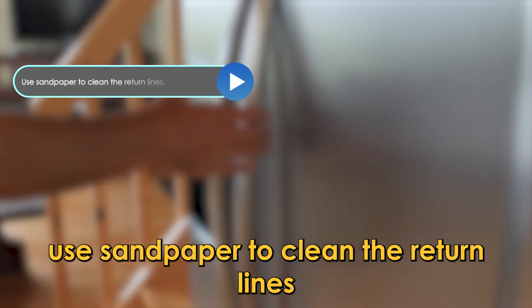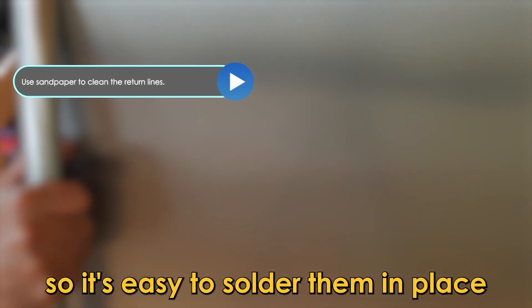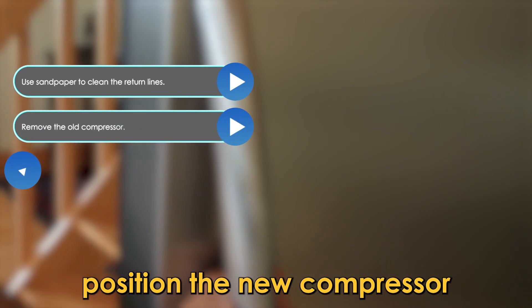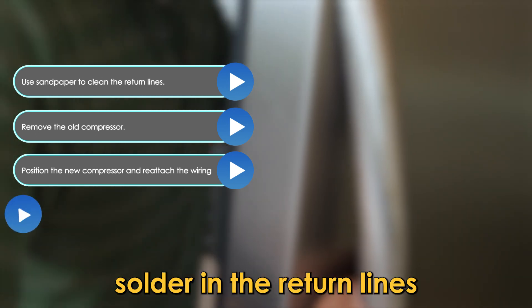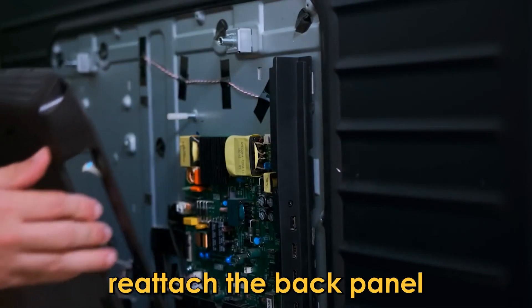Use sandpaper to clean the return lines so it's easy to solder them in place. Remove the old compressor. Position the new compressor and reattach the wiring and mounting bolts. Solder in the return lines. Reattach the back panel.